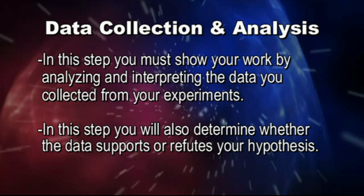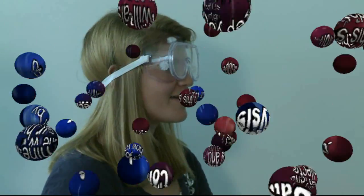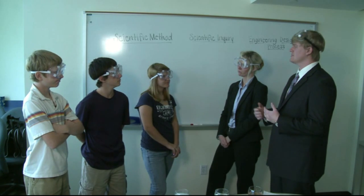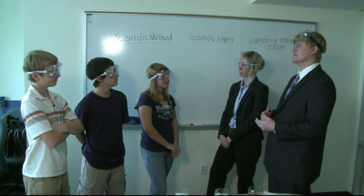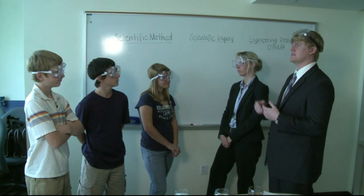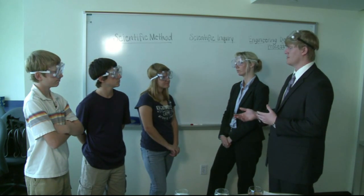In this step, you will determine whether your data supports or refutes your hypothesis. But what happens if, after all of our experiments, we find out that we're totally wrong with our hypothesis? This happens, and just because your hypothesis is wrong does not mean that your experiment is bad. Some scientists will have to conduct multiple experiments before they come to the correct solution. The next two steps would be drawing your conclusions and how this would benefit your community. If you were going to further continue your experimentation, you would need to describe that and how it would help solve your problem.